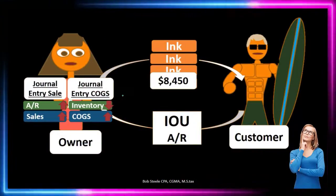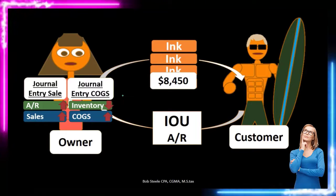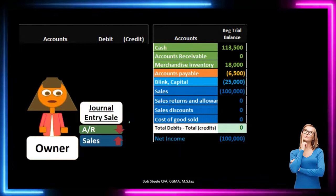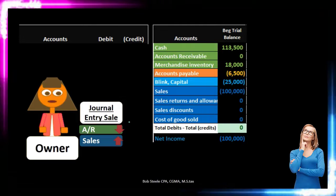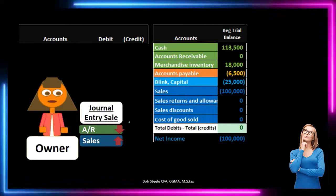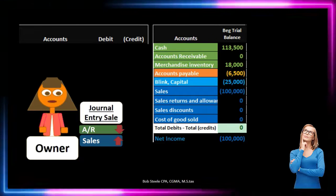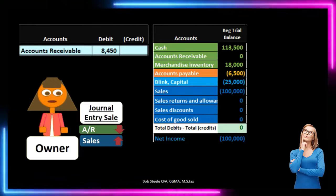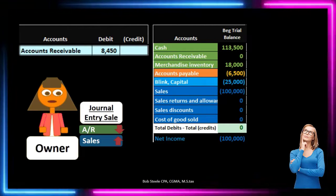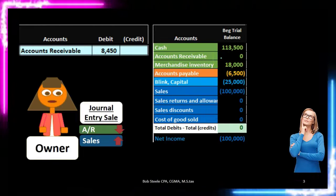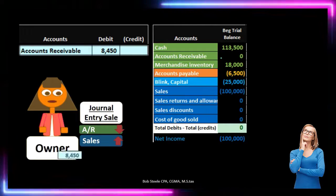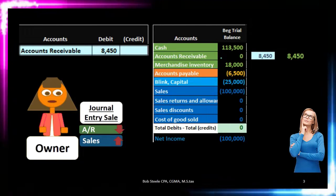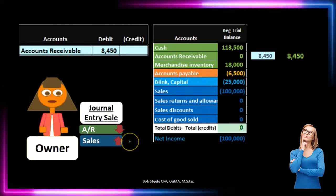Let's look at these transactions one by one, starting with the sales side of the transaction. It's easier to think of this in terms of separate journal entries because the sales side is very similar to what we've looked at for a service company — meaning we completed the work and earned the revenue, so we record accounts receivable for what is owed to us. Accounts receivable is a debit balance account, so we make it go up with a debit from zero to $8,450.